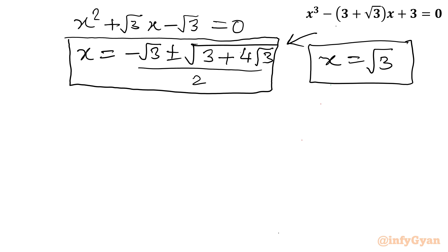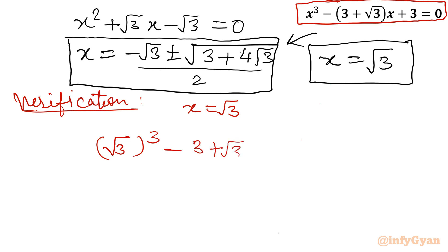If you want to check one value, let us verify. I am going to put x = √3 in the given equation. So I will write (√3)³ - (3 + √3)(√3) + 3. Let us check whether it is coming out 0 or not. So √3 cube is 3√3. √3 times √3 is 3, 3 times √3. 3√3 - 3√3 - 3 + 3. We can cancel these terms. It is coming out 0, which is our RHS.